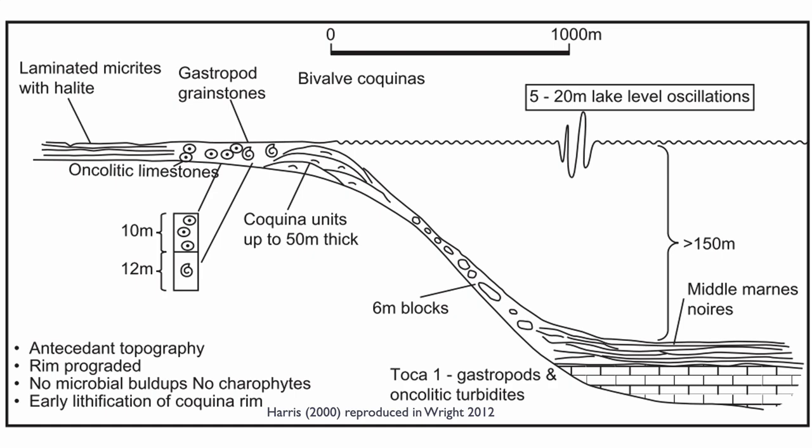One thing to keep in mind is that because this was a lake, it had relatively shallow water — about 100 to 150 meters — and those coquinas were deposited at the edge of that lake. Behind them there may have been some gastropods and micrites with halite on the surface. When people think about Brazil, they also think about the microbialites.